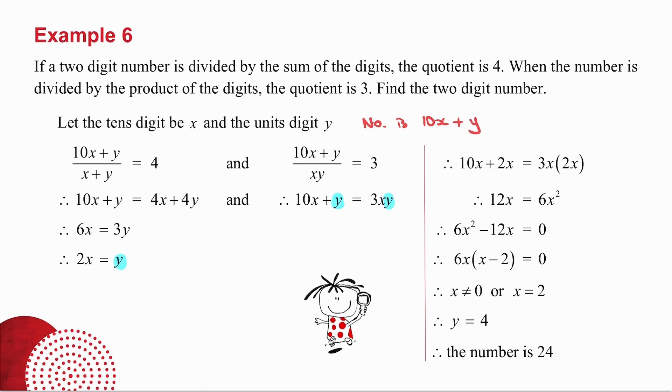And again, whenever you get to the end of a word problem, check and see if it works. So the two-digit number, 24, is divided by the sum of the digits. If I take the number and divide it by the product of the digits, 2 times 4 is 8, 24 divided by 8 is 3. So it works.